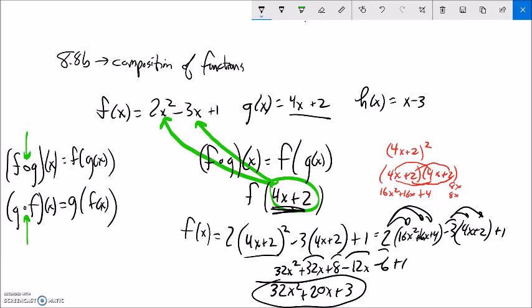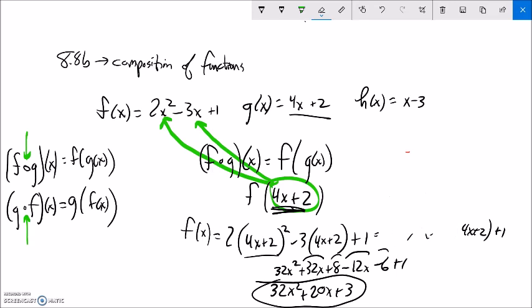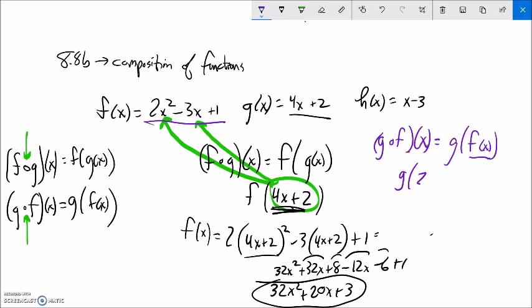So let's take a peek at what g of f of x would be. It's going to be a little less complicated. This would be g of f of x. So we're plugging f into g. So we're going g of, what is f? F is that, 2x squared minus 3x plus 1. So notice that, just like with the other way, that is our input into g. So that will take the place of x in g. So g is 4 times whatever the input is plus 2. The input just happens to be this 2x squared minus 3x plus 1.